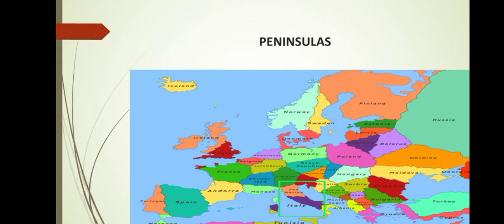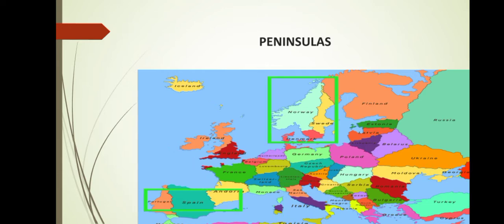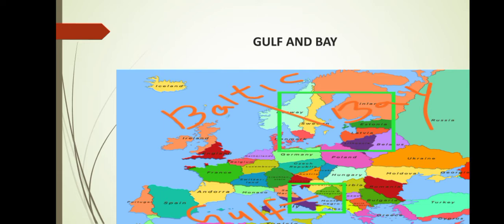India is also a peninsula — it is covered by water on three sides and to the north it is attached with the land. Some more peninsulas in Europe are the Spain and Portugal peninsula and the Scandinavian peninsula. Scandinavian peninsula to the north consists of Sweden and Norway. The presence of a large number of bays and gulfs has also facilitated the use of sea routes.